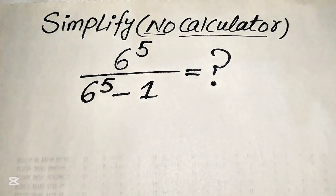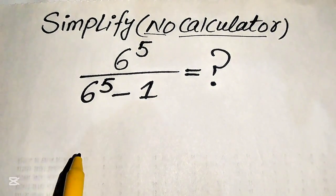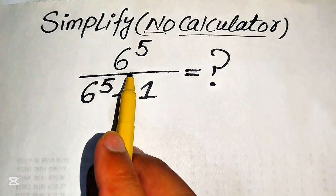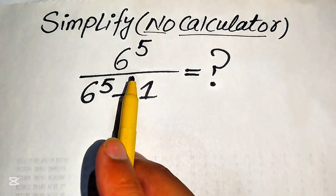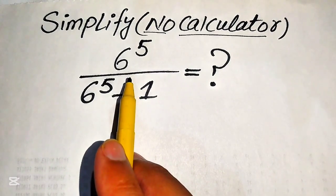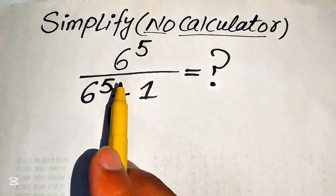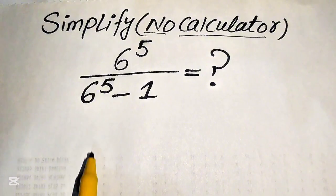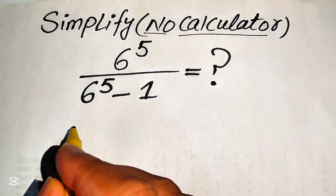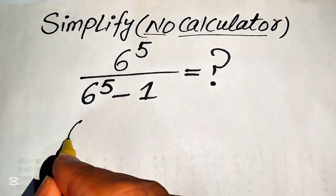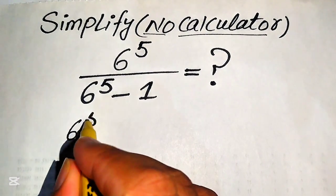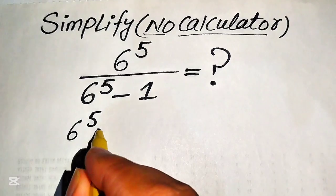The very first thing we are going to do is find the value of 6 to the power of 5, and at the last we substitute this value in and easily get our final answer. So first we find the value of 6 to the power of 5.